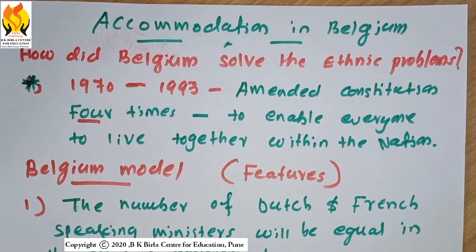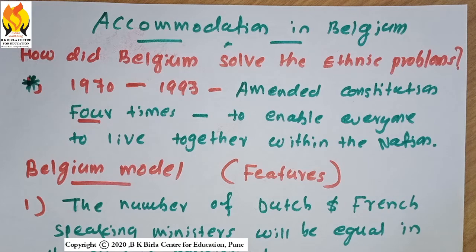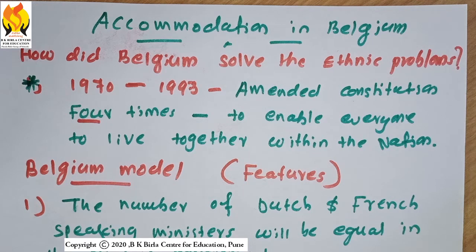Let us see how Belgium solved its ethnic problems. Whenever people are fighting each other, it is not good for a country, so the government should take appropriate measures to resolve the conflict. If the government fails to do so, the ultimate result may be a civil war or some other armed conflict. But the Belgian administration was very serious about this issue and took timely steps to resolve the problems.